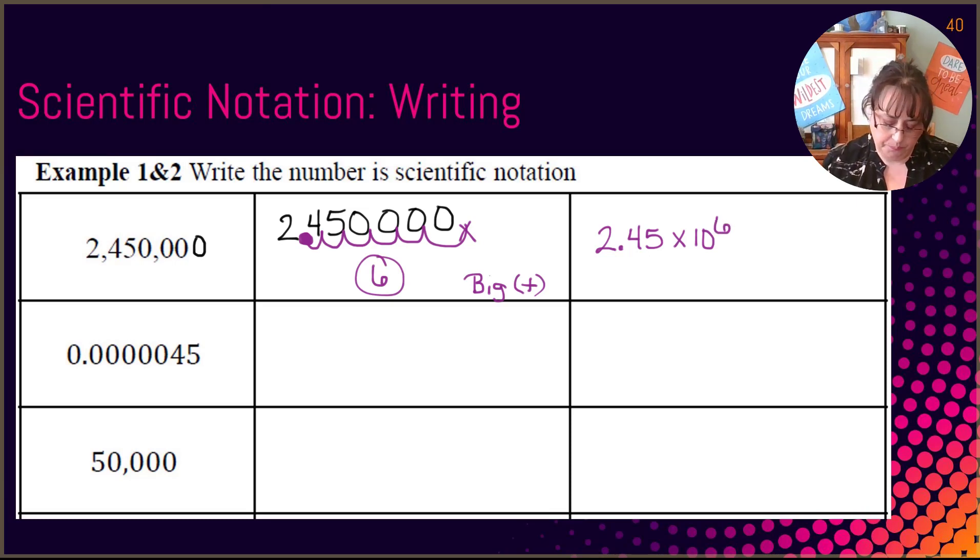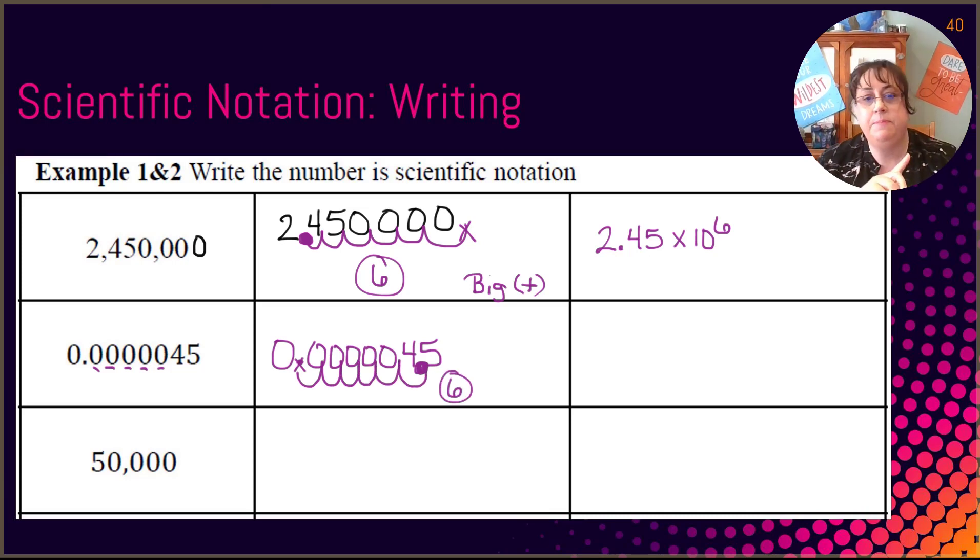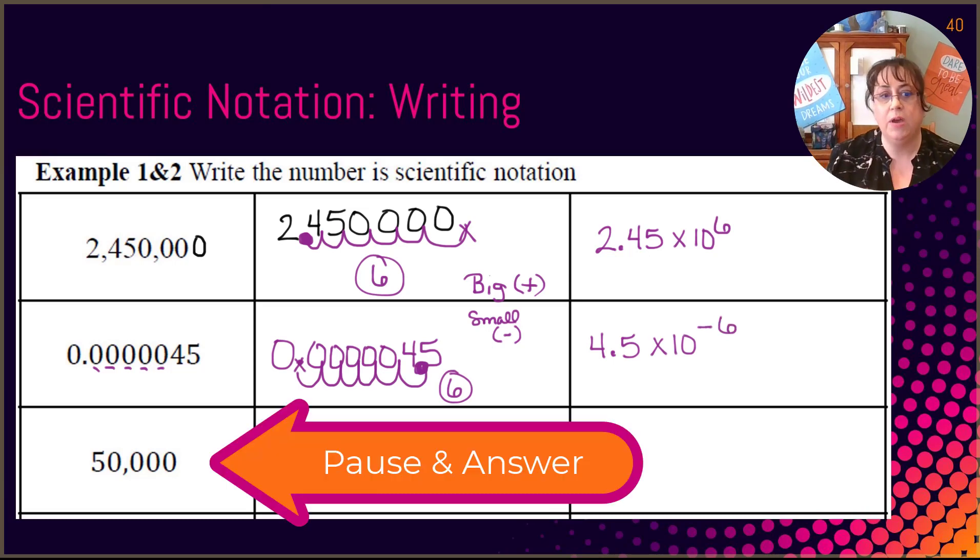So we're going to do the same. Don't forget your decimal. 1, 2, 3, 4, 5. And then the 4 and the 5. We have to have one number in front of it. Put a big fat decimal and that's where it started. So now we have to count how many is between. 1, 2, 3, 4, 5, 6 again. But is this a big number or a small number? It is a small number. So we're going to use a negative. So our answer is 4.5 times 10 to the negative 6.